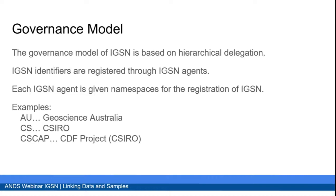The IGSN identifiers themselves are registered through the IGSN agents. To make sure there's no overlap in numbers, each IGSN agent is given a so-called namespace for registrations. For example, all IGSNs registered by Geoscience Australia start with 'AU,' and then after that it's up to Geoscience Australia to make sure those identifiers are unique. CSIRO identifies with 'CS' — we delegated some of that to the Capricorn Distal Footprints project and gave them the namespace 'CSCAP.' Then it's their responsibility to make sure names are unique and don't interfere with any other projects in CSIRO using IGSNs.